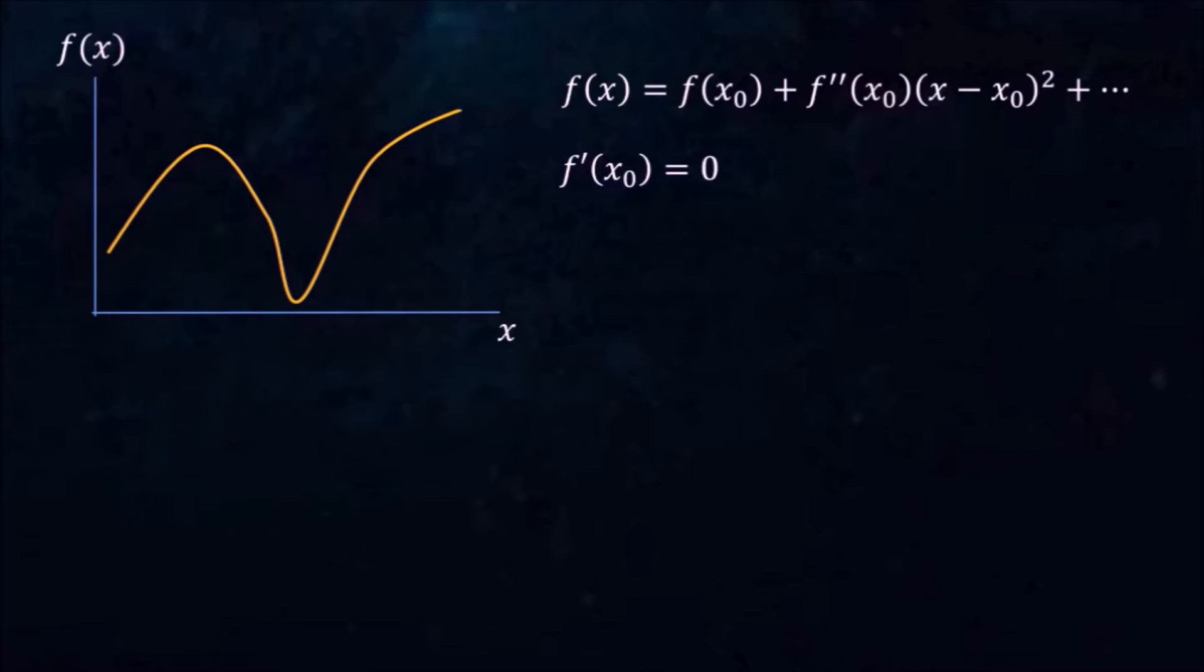We can extend this approach to our distance s. Let us imagine that we know the path that minimizes s. Let's call this path y. We can choose an arbitrary parameter, say lambda, to help us describe this path.